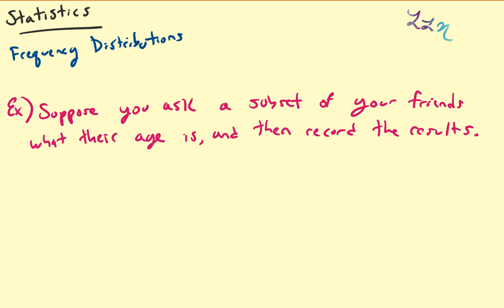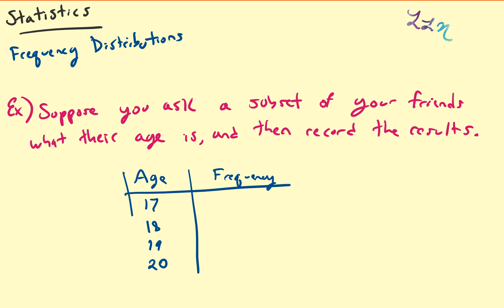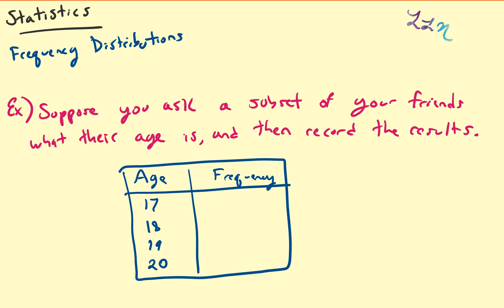In this video we're going to talk about frequency distributions for sets of data. As an example, suppose you ask a subset of your friends what their age is and record the results. Let us assume the only ages that people responded are 17, 18, 19, and 20, and the counts of people who stated each age are 5, 13, 15, and 9.